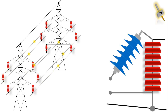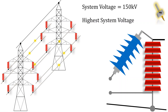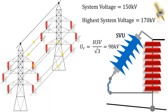Now let's see an example. Let's take a system voltage of 150 KV. It will have a highest system voltage of 170 KV. So the rated voltage of the SVU will be 98 KV.